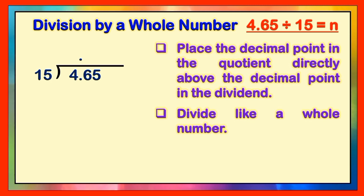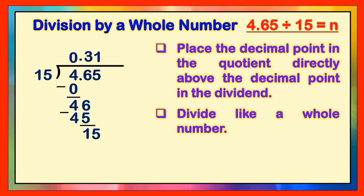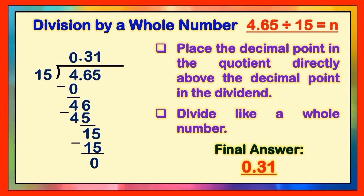Let's begin. 4 divided by 15 — we will get 0. Then multiply it by 15, we will get 0. Get the difference of 4 and 0, we will get 4. Then bring down the next digit, which is 6, to get the new number 46. Divide by 15 — we will get 3. 3 times 15 equals 45. The difference is 1. Bring down the last digit, 5, to form the new number 15. Divide by 15 — we get 1. Multiply: 1 times 15 equals 15. Get the difference — we get 0. Finally, the answer is 0 and 31 hundredths.